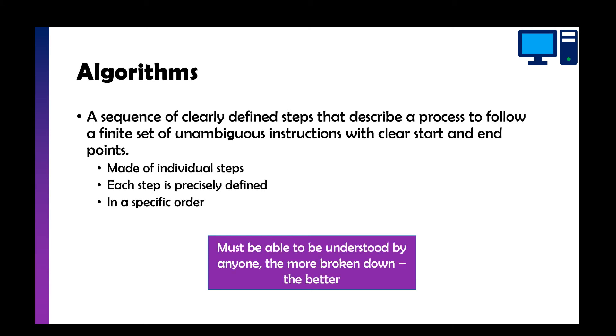Now an algorithm is a sequence of clearly defined steps that describe a process to follow a finite set of unambiguous instructions with clear start and end points. So that's a very mouthy, very detailed definition, but essentially an algorithm is a sequence of steps to solve a problem. So there should be individual steps, they should be precisely defined, and it should be in a specific order. So for example, if you're baking a cake you're not going to put the mix in the oven before you've actually mixed it all together and whisked it and whatnot, otherwise it'd become a big lumpy horrible mess of a cake. So the idea is the algorithm should be really easy to understand. It should essentially be able to be understood by anybody really, and it should be really broken down into individual steps. If you've got a step that does a couple of things instead of one thing then that makes it a lot harder to understand and follow.